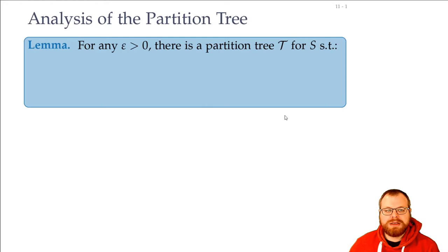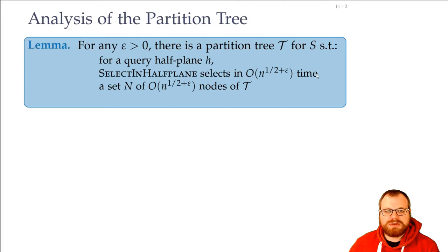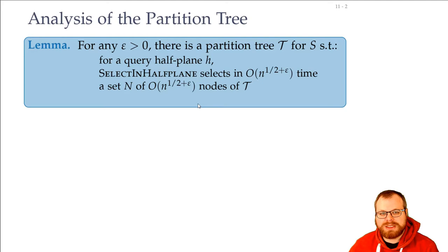Let's start with the running time of the queries. For any epsilon greater than zero, there is some partition tree such that we can answer the half-plane queries — the select-in-half-plane — in order of n to the 1 over 2 plus epsilon time. This is a little bit more than square root of n. And the set of nodes that we select is also this much — order of n to the 1 divided by 2 plus epsilon — just a little bit more than square root of n nodes.